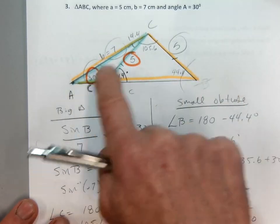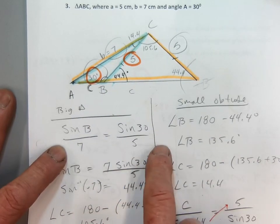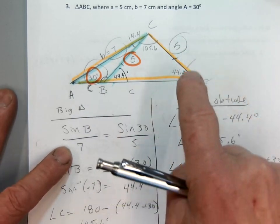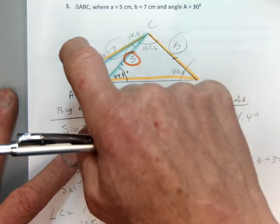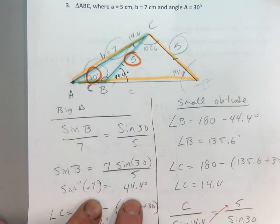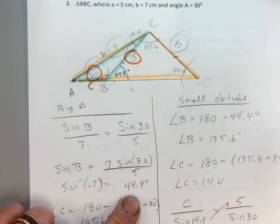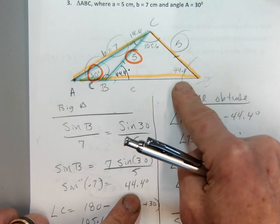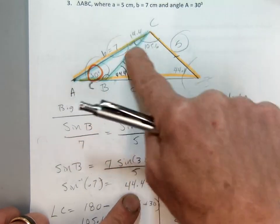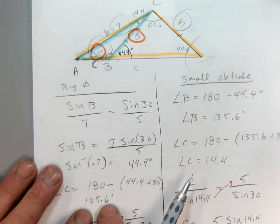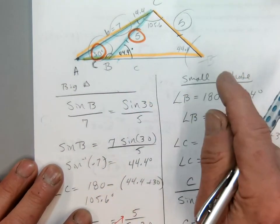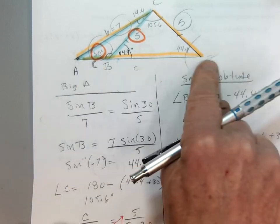And then I went big triangle, so I went my opposite, so I went sine of B over seven equals sine of 30 over five. We found that the angle was about 44.4 degrees. We knew to find the third angle. We subtracted it from 180. We got 105 degrees there. And then we need to find side C.